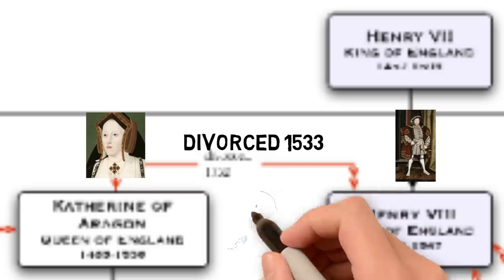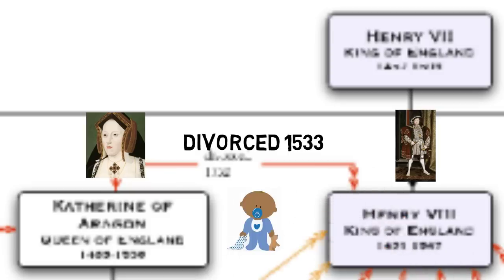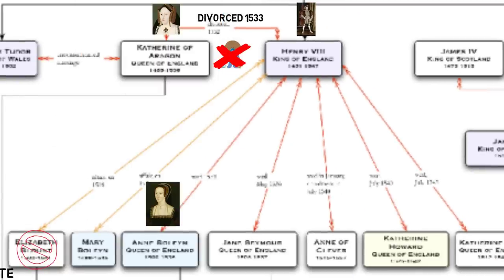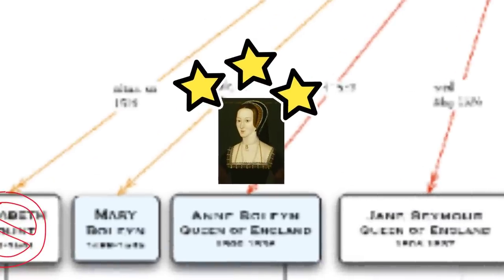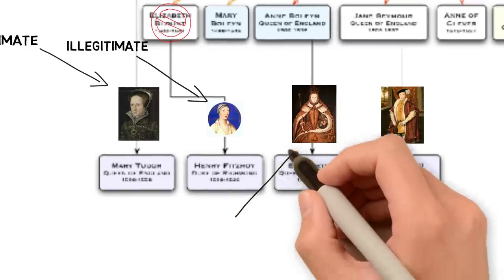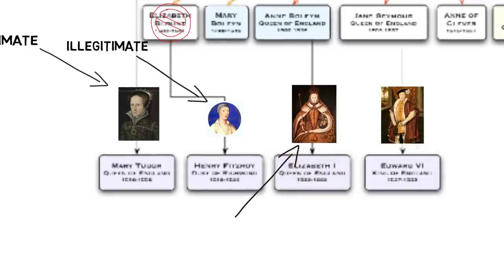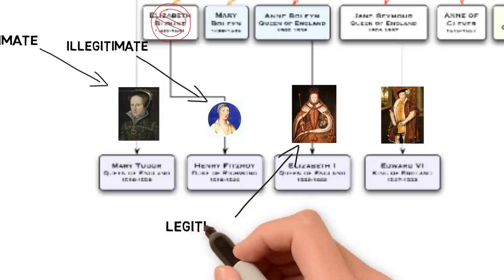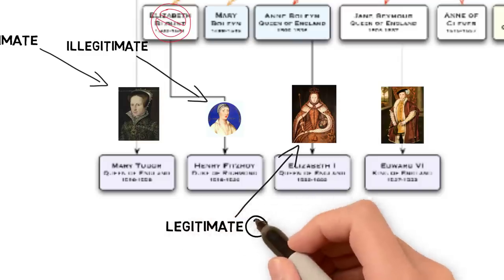In 1533, Henry divorces Catherine of Aragon. One of the main reasons is that she didn't give him a son. He falls in love with one of Catherine's ladies-in-waiting — clever, pretty, exotic, and from the French court — Anne Boleyn. He marries her in 1533 and they have a daughter. Since Elizabeth is born after her parents are married, this means she is legitimate... or does it?